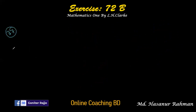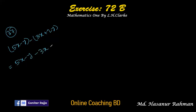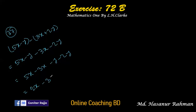Number 37 says 5x minus y minus 3x plus 2y. Removing the bracket: minus into 3x is minus 3x, minus into plus 2y is minus 2y. Rearranging: 5x minus 3x minus y minus 2y. 5x minus 3x is 2x, and minus y minus 2y is minus 3y. Answer is 2x minus 3y.